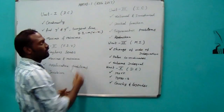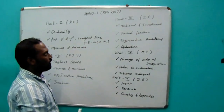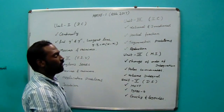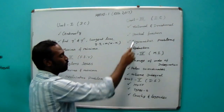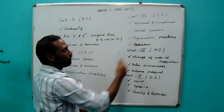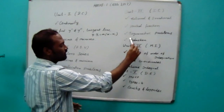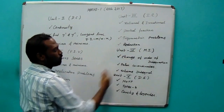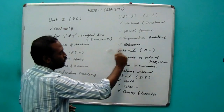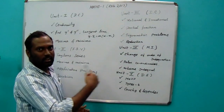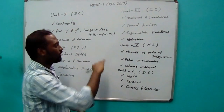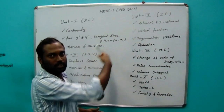Then Unit 3 is the integral calculus. In the integral calculus, there are topics: rational, irrational, and partial fraction based problems. Trigonometric problems and reductions. Based on reduction proof problems — sin theta, cos theta, secant theta, tan theta. Reduction formula problems.